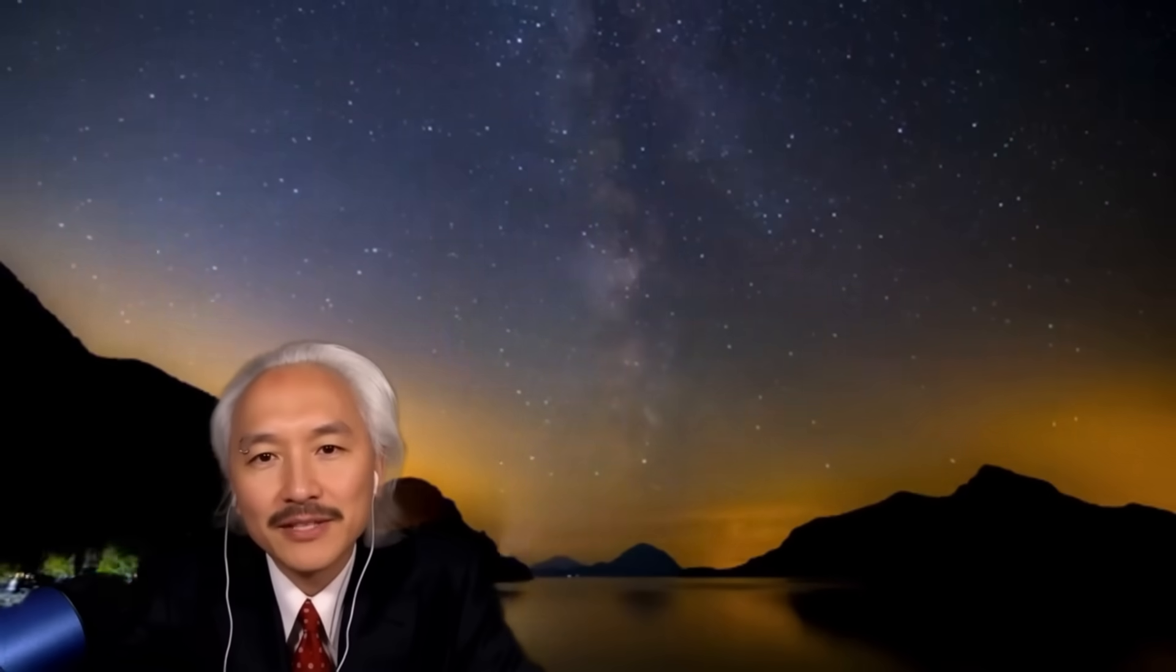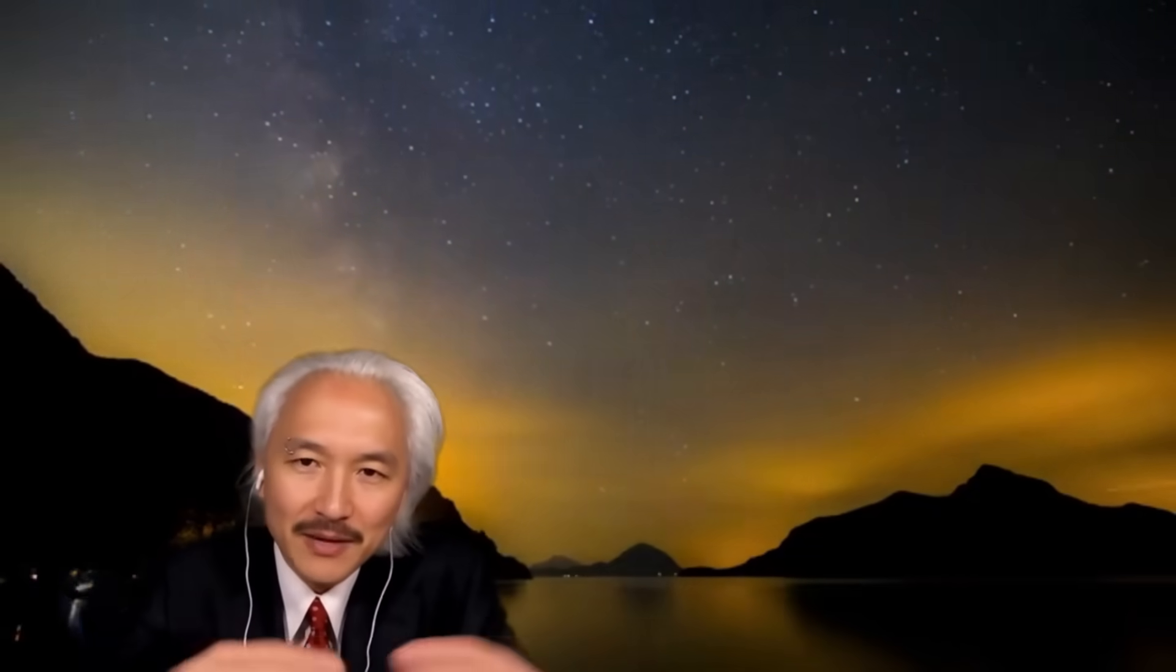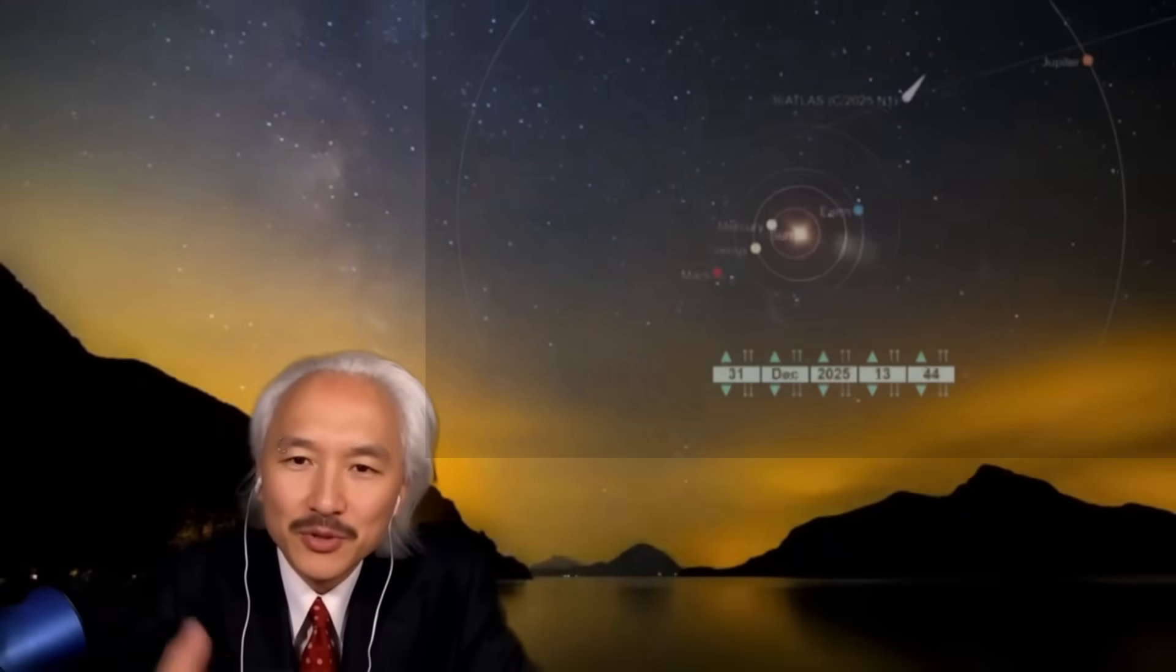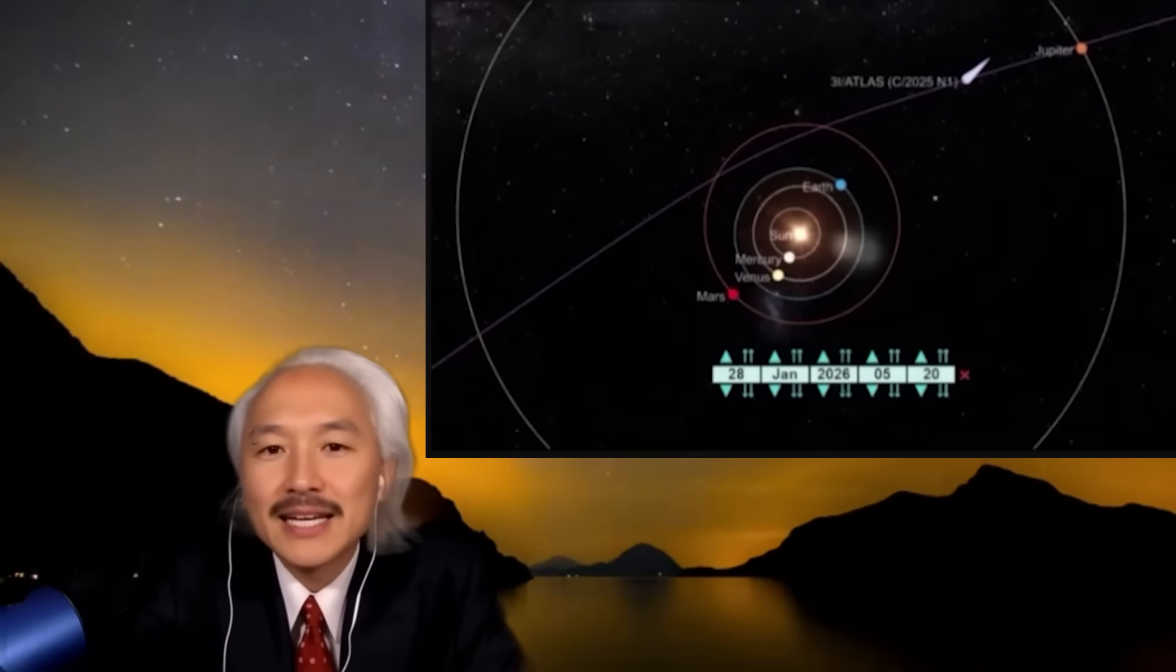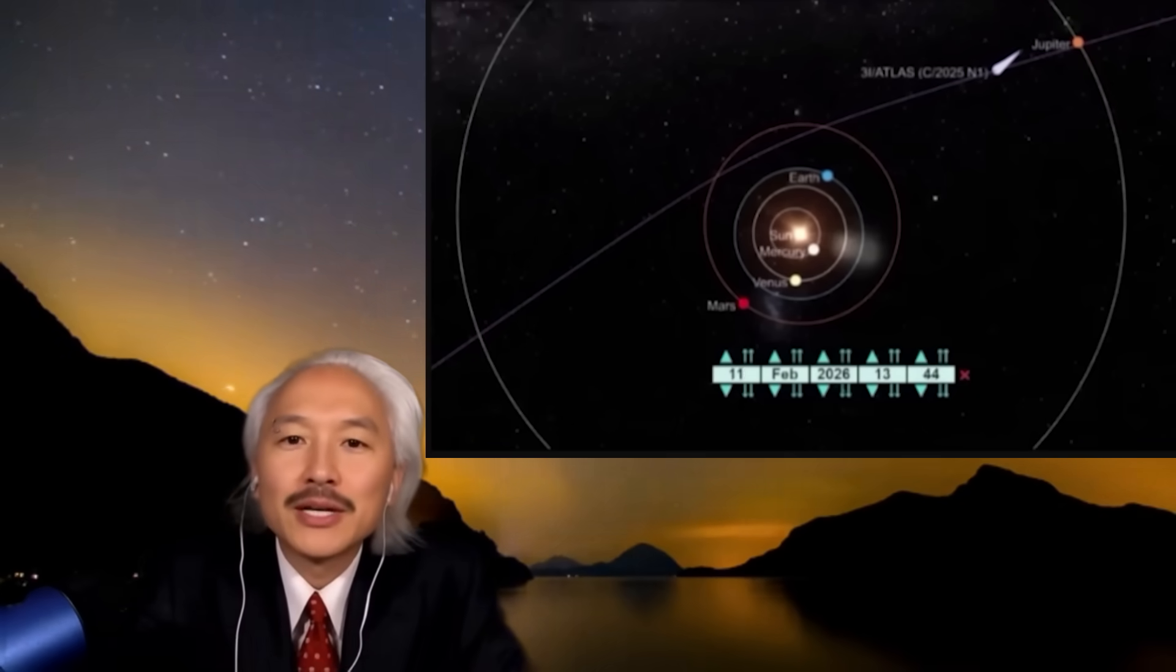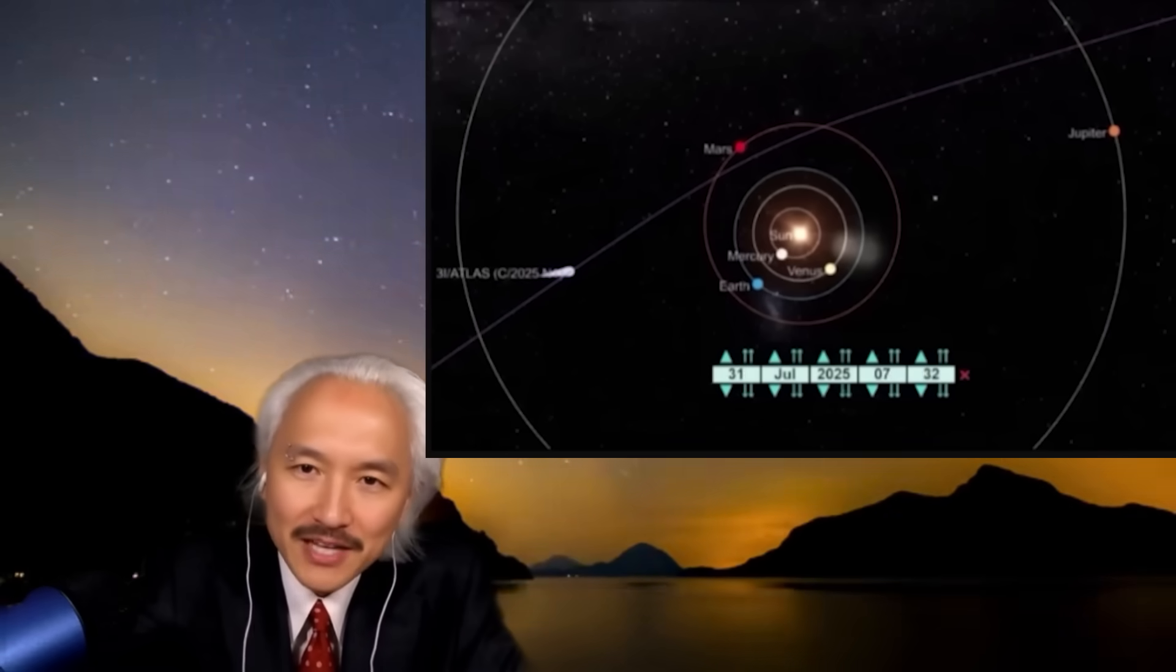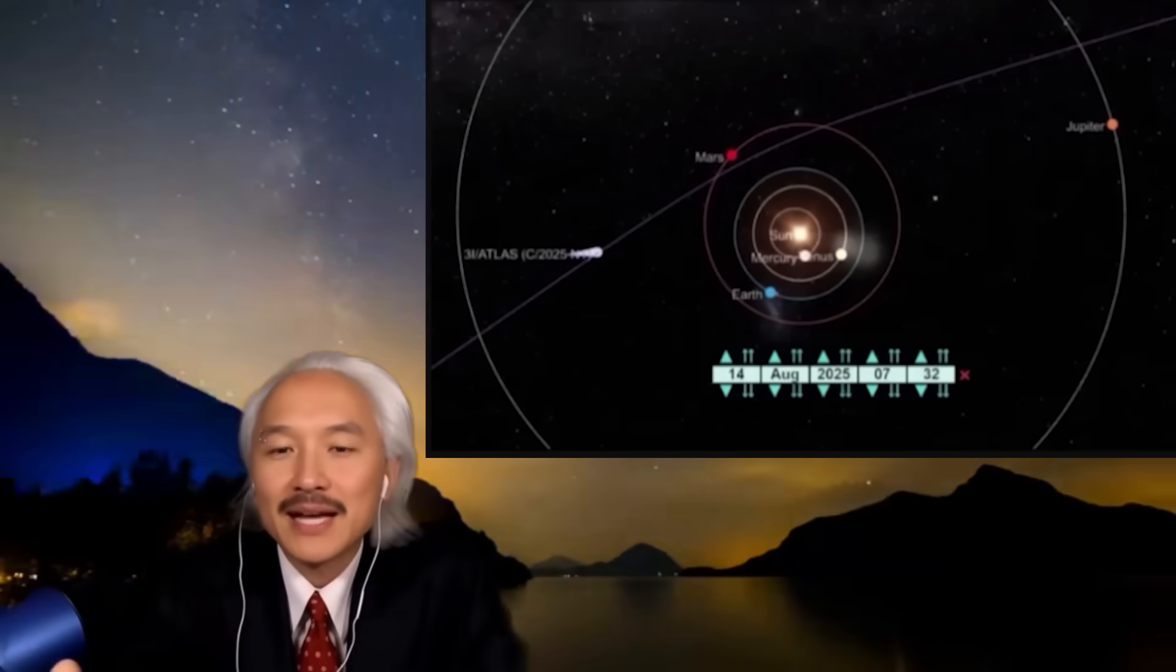Now, folks, let's talk about the 3I Atlas. It was photographed by NASA's LASCO probe. This graph is very interesting for us to see where the position of 3I Atlas is. Here are the dates. Earth is here in blue, and 3I Atlas is here. Let me start the animation again here for you to see more or less where it is at this moment.